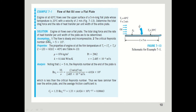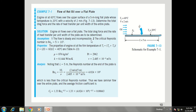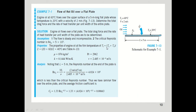Assumptions: the flow is steady and incompressible, and the critical Reynolds number is Re_critical = 5 × 10⁵. To find fluid properties, we first calculate the film temperature: T_f = (T_s + T_∞)/2 = (20 + 60)/2 = 40°C.